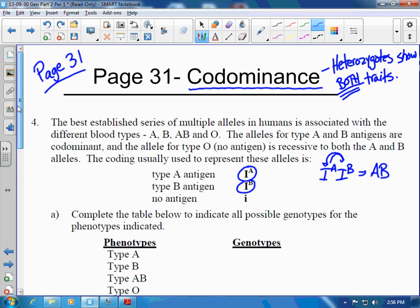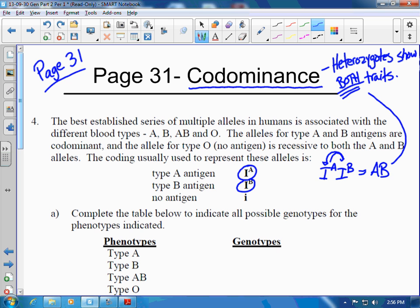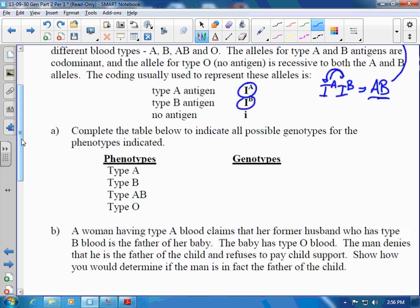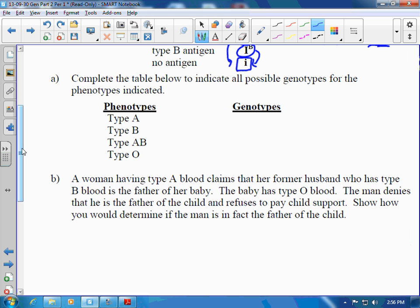This is why we see both traits. It's not a blend. We don't see like an A and a half or something silly. It is literally just expressing both traits. Now the recessive little i will be present and either the A or the B can overpower the little i. A type A individual could be homozygous IA IA, or it could be IA little i, heterozygous.